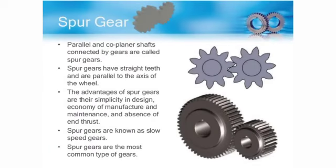Spur gears, or straight cut gears, are the simplest type of gears. They consist of a cylinder or a disc with teeth projecting radially. The edge of each tooth is straight and aligned parallel to the axis of rotation.